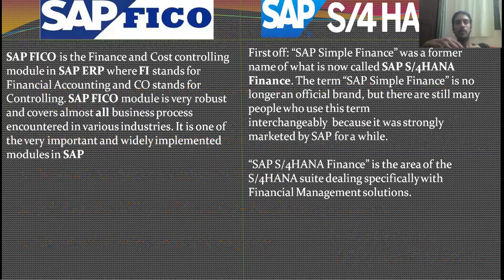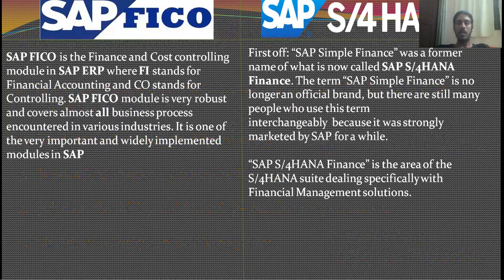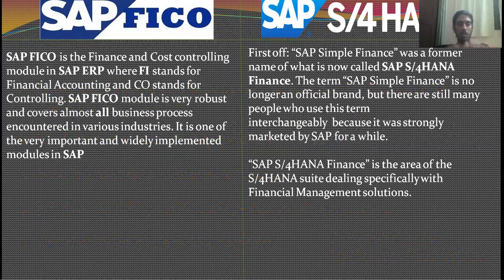SAP FICO is abbreviated as Finance and Cost Controlling module. This is in SAP ERP — Enterprise Resource Planning — where FI stands for Financial Accounting and CO stands for Controlling. This is a very robust module, and when I say robust, it is very deeply and tightly integrated within almost each and every business module available across the floor.